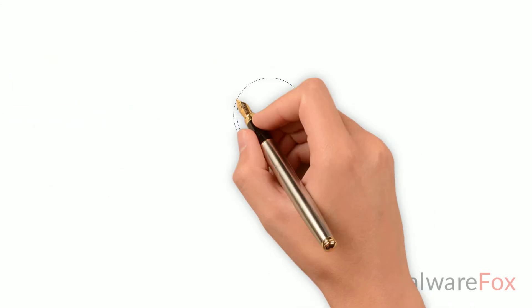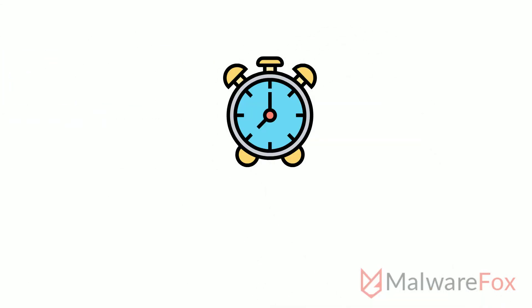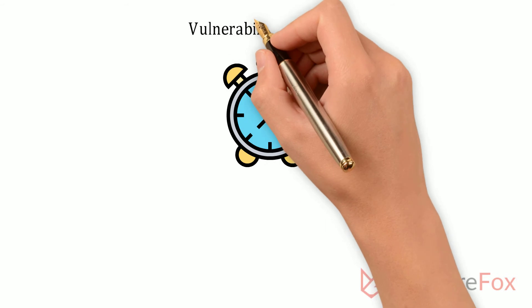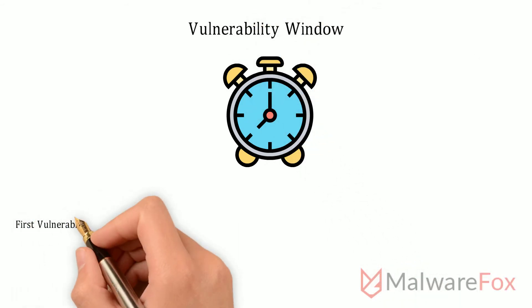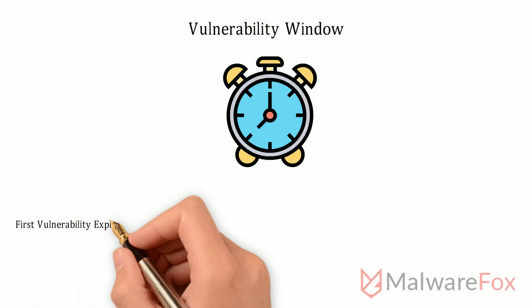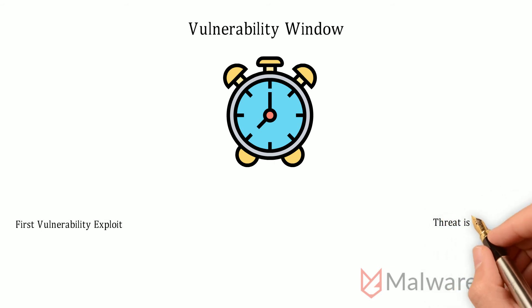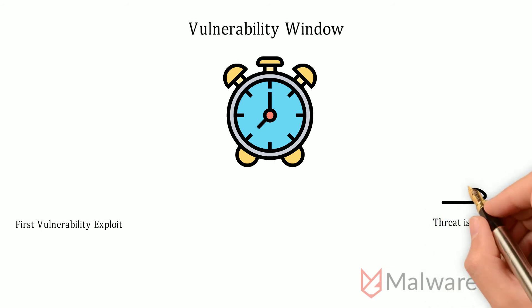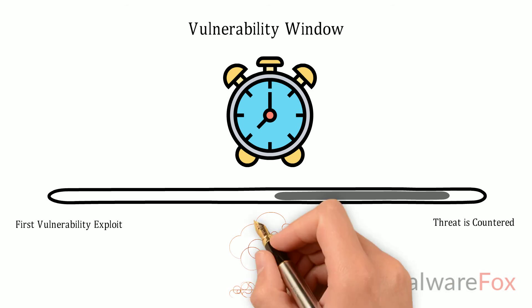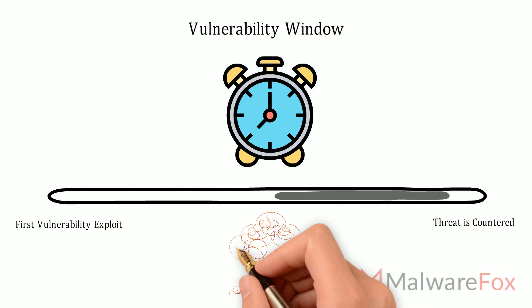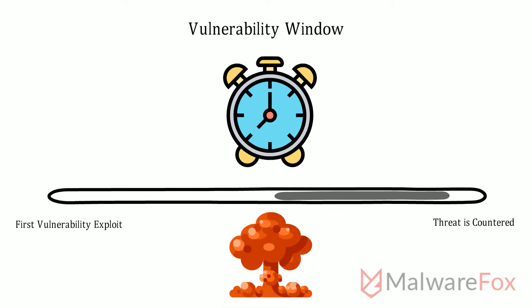Zero day attacks occur within a specific time frame known as a vulnerability window. This is the time beginning from the first vulnerability exploit to the point at which a threat is countered. Zero day attacks are strategically implemented to cause maximum damage within a short span of time.